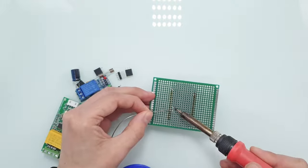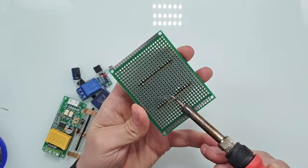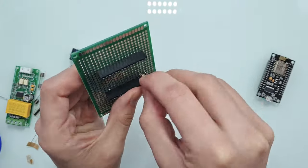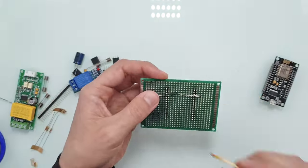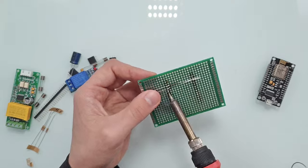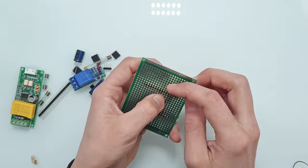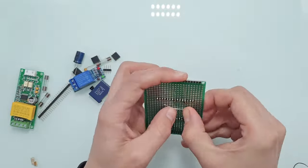First, let's solder female socket header connectors for the ESP8266. Now we need to solder three 4.7K pull-up resistors. Two of them are pull-up resistors for the I2C bus. They pull the I2C bus to 3.3V. Another resistor is a pull-up resistor for the 1-wire bus.